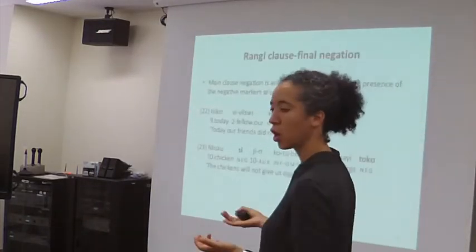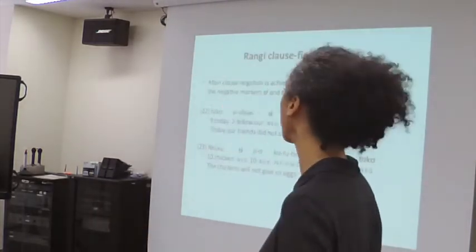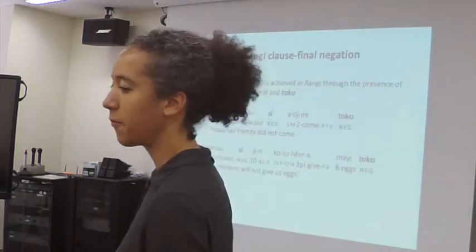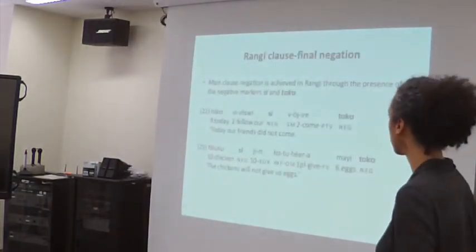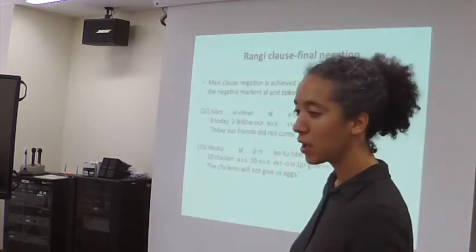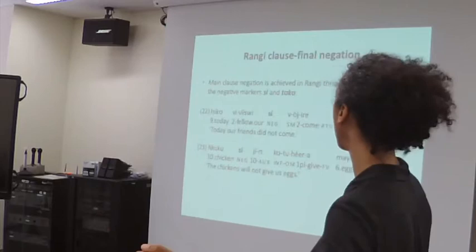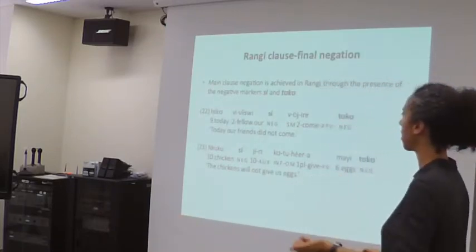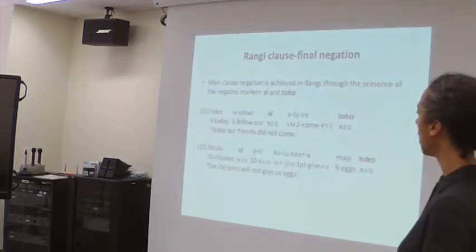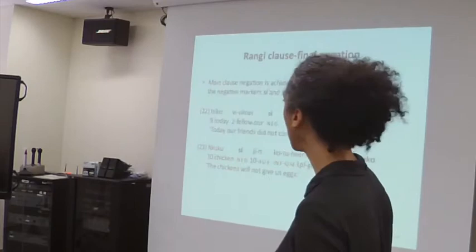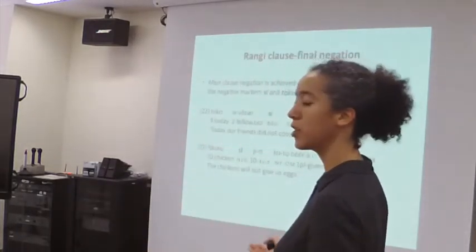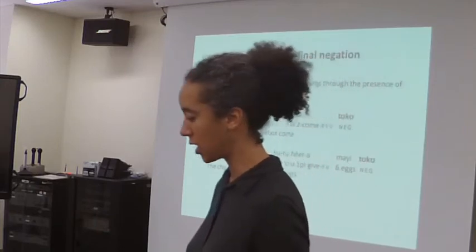Clause-final negation. It's like looking for a needle in a haystack — you look at a language and look for things that are unusual, things that are non-canonical Bantu features. Main clause negation in Rangi is achieved through two markers — a bipartite negation strategy. For example, 'today our friends did not come' — you have a 'c' element and then 'tuku' at the end. It can appear after the verb or clause-finally, perhaps with some difference of scope.